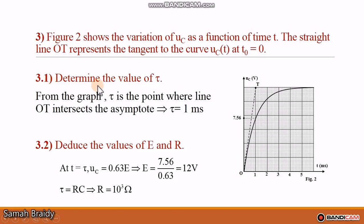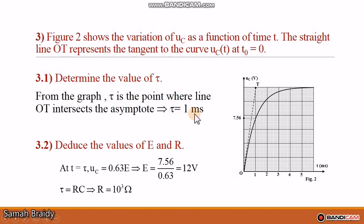Part 3.1: determine the value of τ from the graph. The tangent drawn at t equal to 0 intersects the asymptote at a point whose time coordinate gives τ. From the graph, this intersection occurs at τ equal to 1 millisecond.